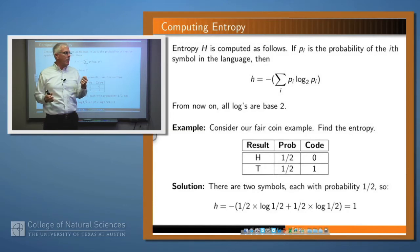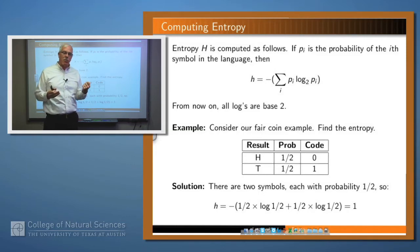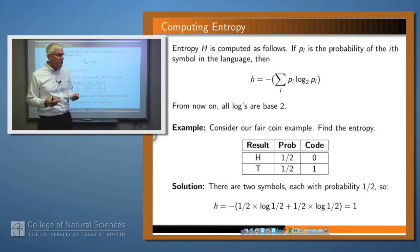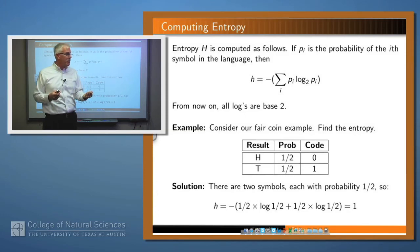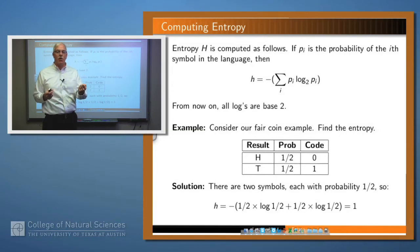So how do we compute the entropy of a language? If p sub i is the probability of the i-th symbol in the language, then we compute the entropy as follows: we multiply the probability of a symbol times the log base 2 of the probability, add all those up, and stick a minus sign out in front. All of the logs we're dealing with here are log base 2. For our fair coin example, we have two symbols, each with probability one half, and so the entropy H is minus one half times log of one half plus one half times log of one half. If you compute that on your calculator, you'll see that that's one.